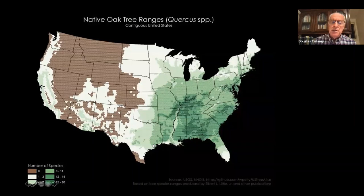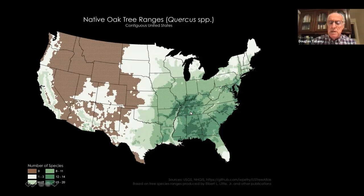This is the distribution of oaks — everything except areas shown in brown has at least one species of oak. The white areas have one to three species, while the dark green areas have 15 to 20 species. The Southeast is the center of distribution, but most areas of the country have at least one species.